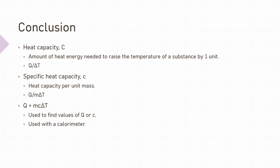In conclusion, heat capacity denoted by capital C is the magnitude of heat energy needed to raise the temperature of a substance by one unit; mathematically it equals Q divided by ΔT. Specific heat capacity denoted by lowercase c is the heat capacity per unit mass, mathematically equal to Q over m times ΔT, and any amount of a material will have the same specific heat capacity. The equation q = mcΔT can be used to find Q or c, and is usually used in conjunction with a calorimeter. If you found this video helpful, please like and subscribe — thank you very much for watching.